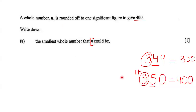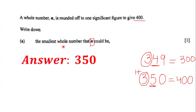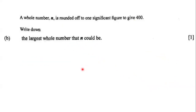So our answer is 350 — the smallest whole number that n could be such that when we round it to one significant figure, we get 400. Next, we have to write down the largest whole number that n could be such that when we round it off to one significant figure, we get 400.